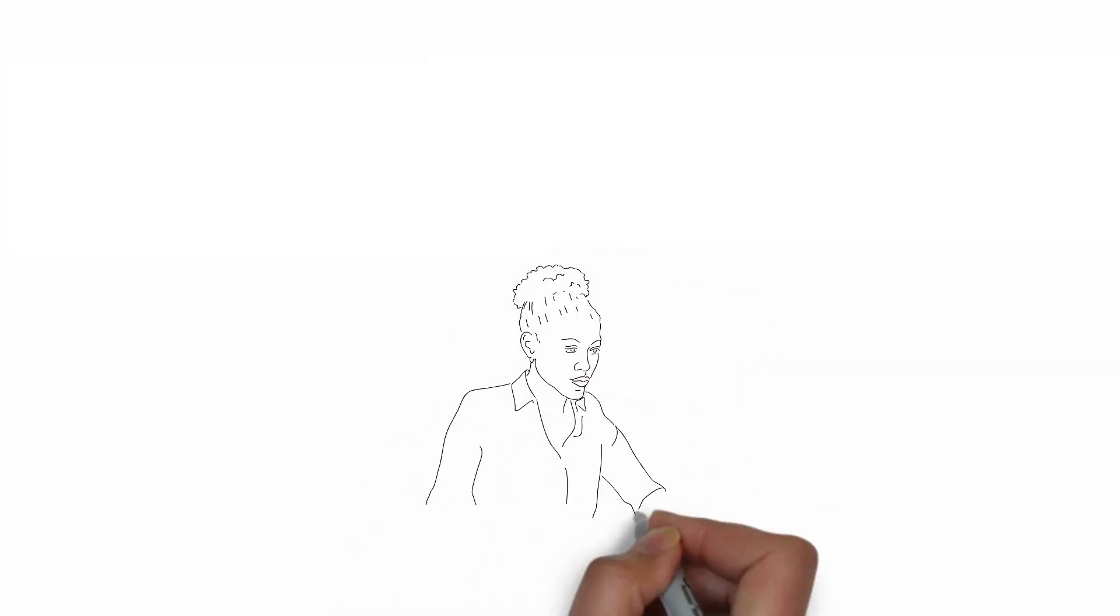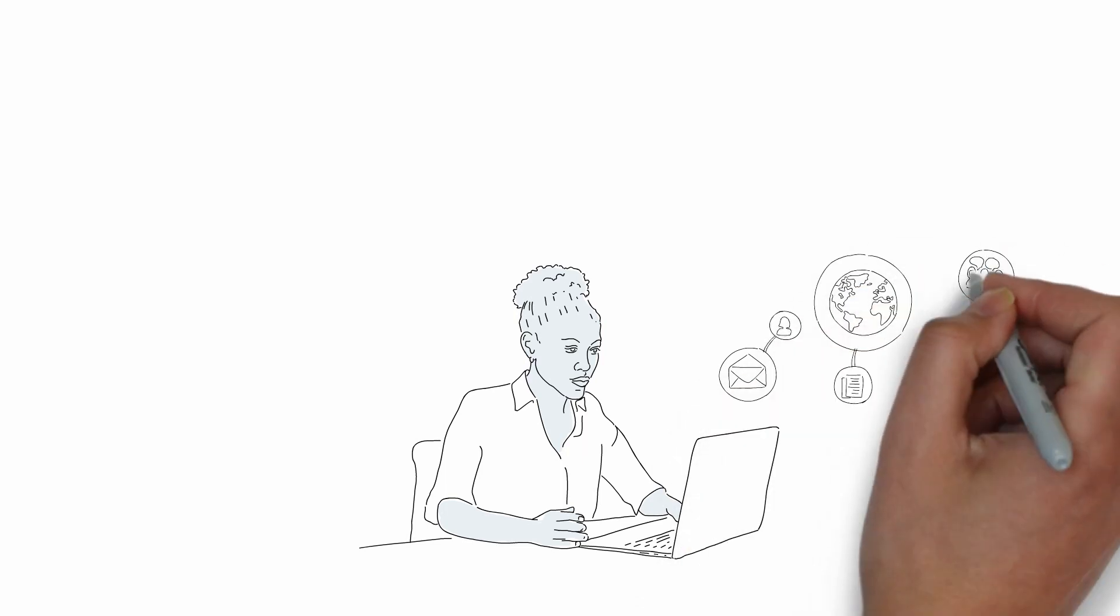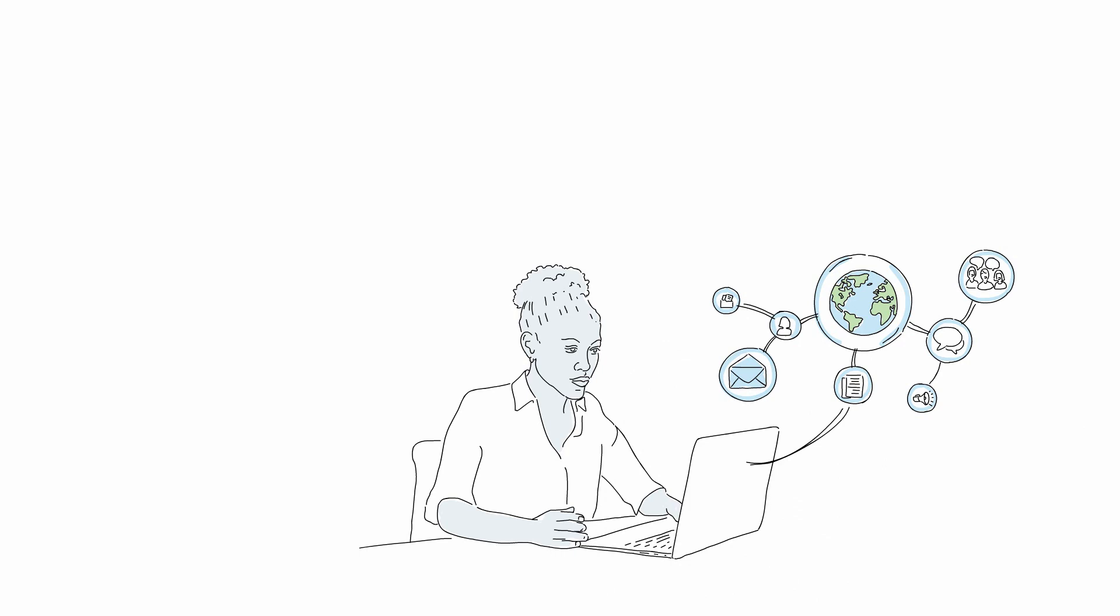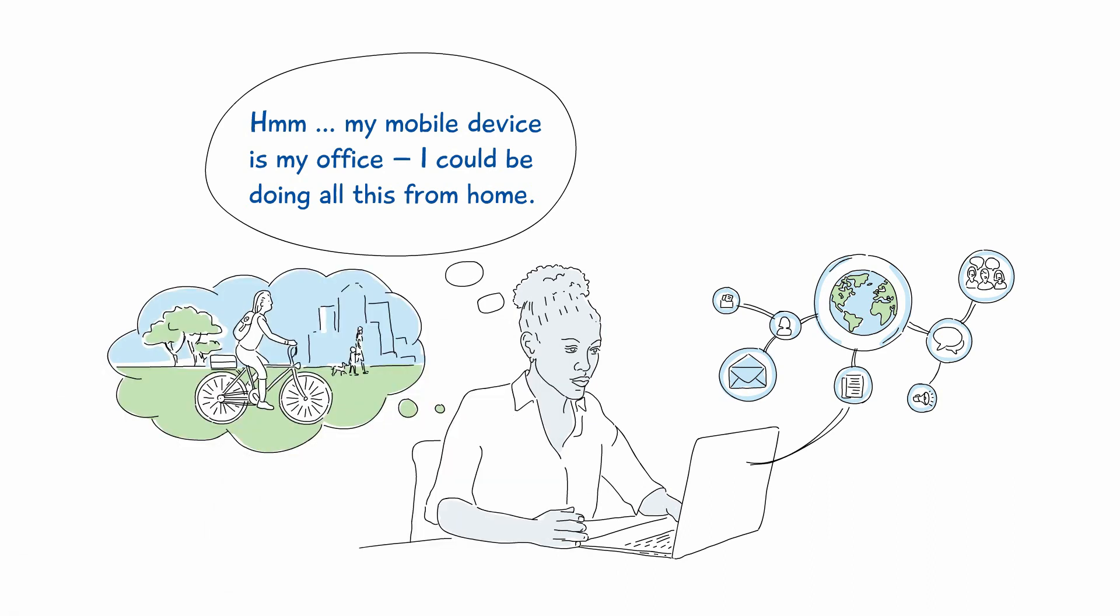Rosa spends most days working on a laptop, sharing documents and having virtual meetings with colleagues all over the world. Does she really need to travel physically to work every day? And when she does, how can we make it easier for her to cycle or go by foot?